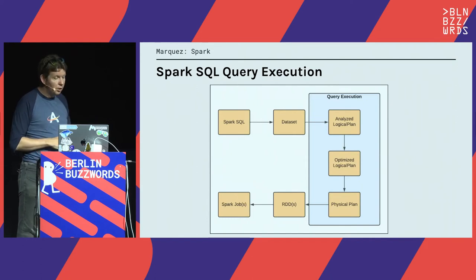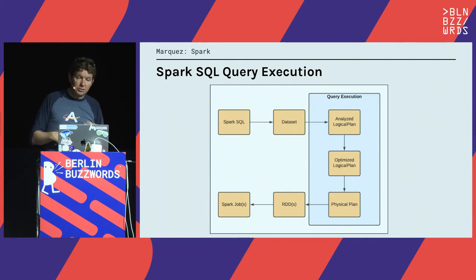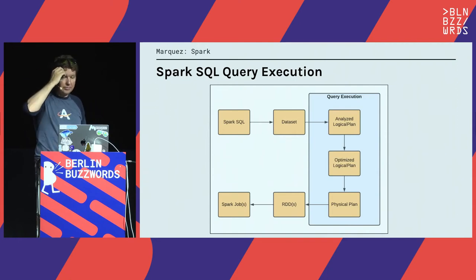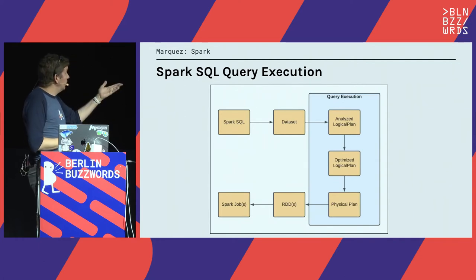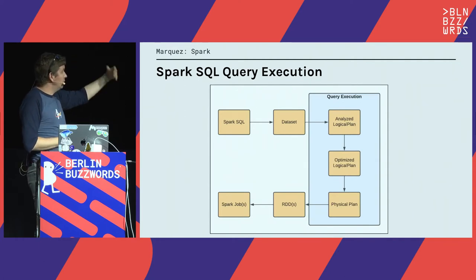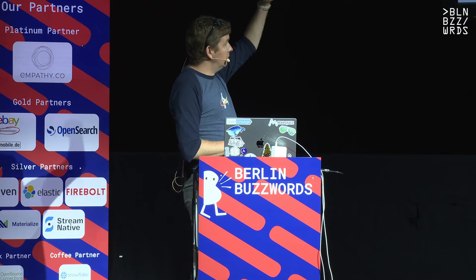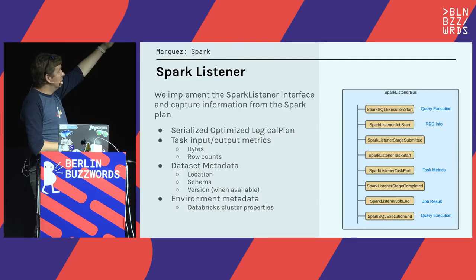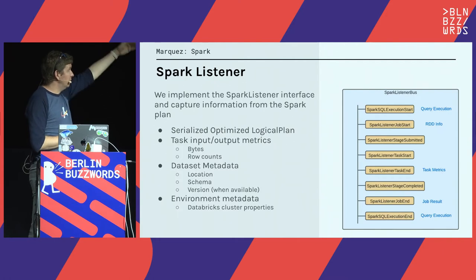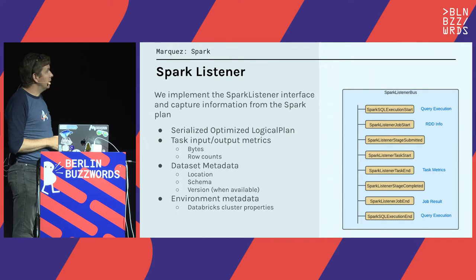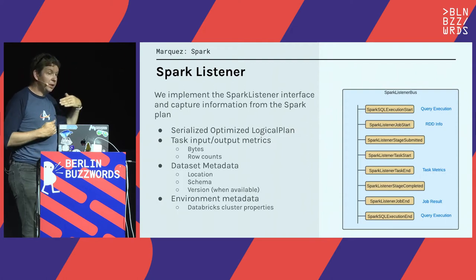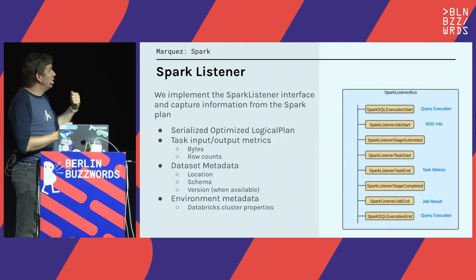Here's a rough overview of how Spark SQL query execution works. You start from a data set, the logical plan gets analyzed, we can inspect the logical plan, which gets turned into a physical plan to get executed with RDDs. Using the query execution listener, we send a bunch of events as the query gets executed: a SQL execution start that includes the logical plan, a Spark listener job start when the job actually gets executed with task metrics including how many rows were written, and then a complete event when the job finishes.